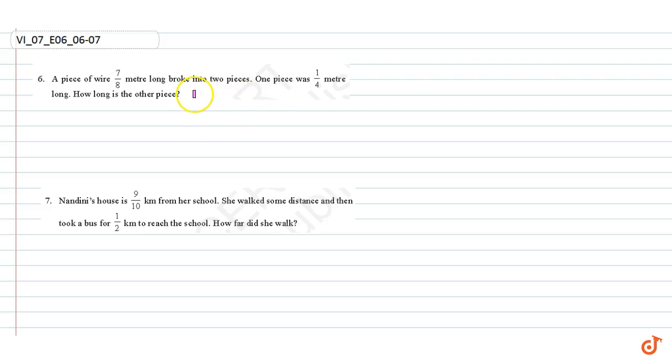In this video, we are going to solve question number six and seven. Question number six: a piece of wire seven by eight meter long broke into two pieces. One piece was one by four meter long. How long is the other piece?